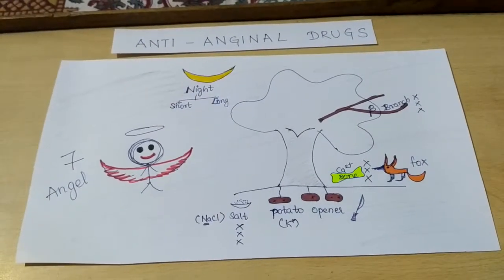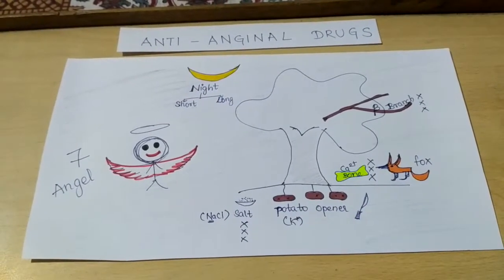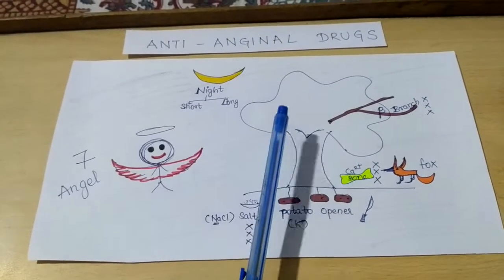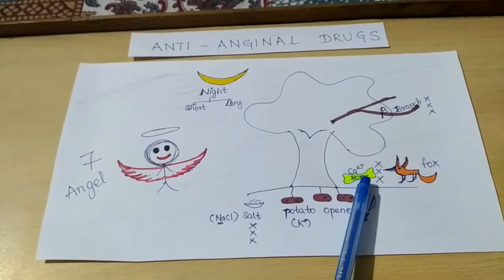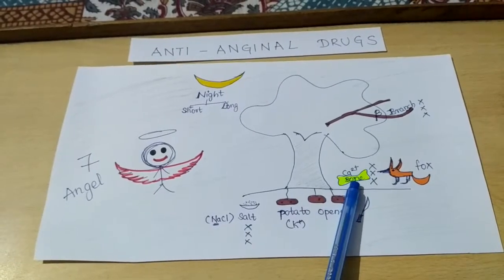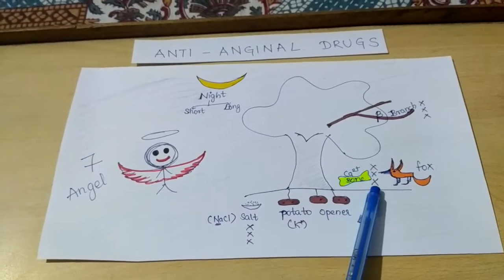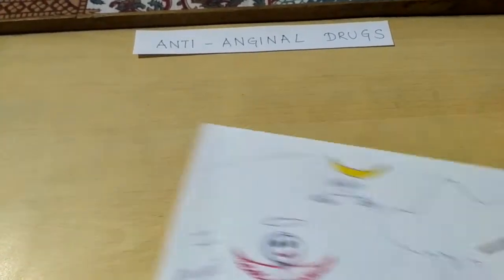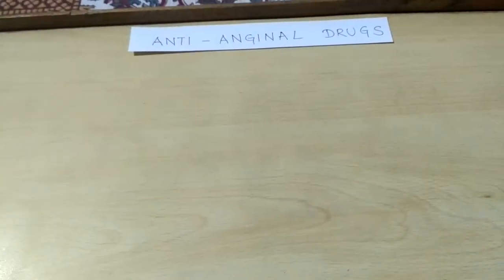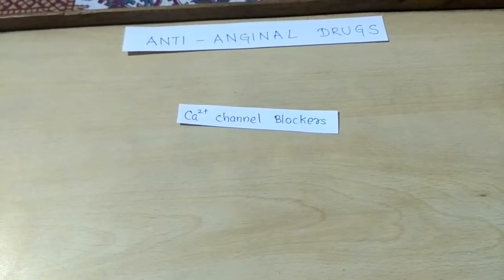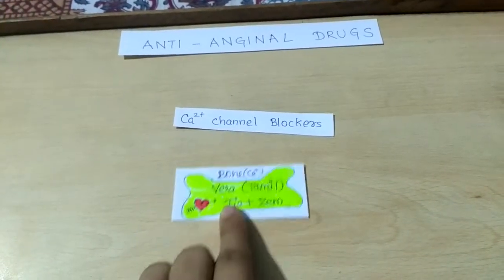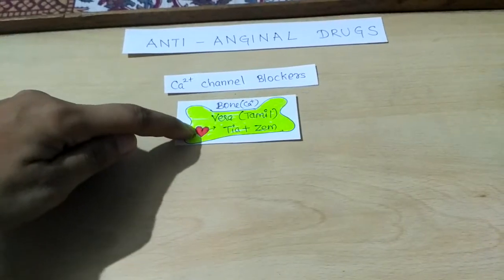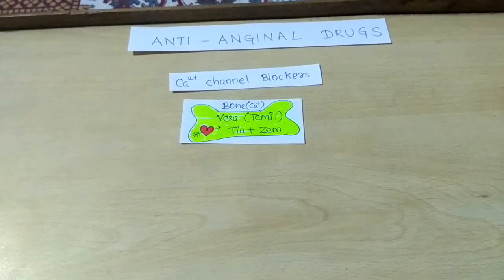Hello friends, in continuation with the anti-anginal drugs, today we are going to focus on this tree — the bone and the fox and the three crosses. We'll firstly focus on the calcium channel blockers, which is represented by the bone. When we see the bone closely, we see...